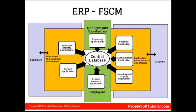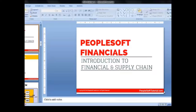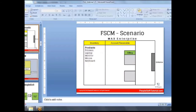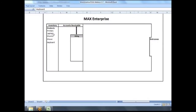Let's take an example of how FSCM requirements work in the real world. We are taking an example of a fictitious company, Max, to understand it clearly. Consider that Max Enterprise is a new company and they want to sell printers, laptops, monitors, mice, and keyboards. These are the products they want to sell, and consider that this is the top view of the first store.